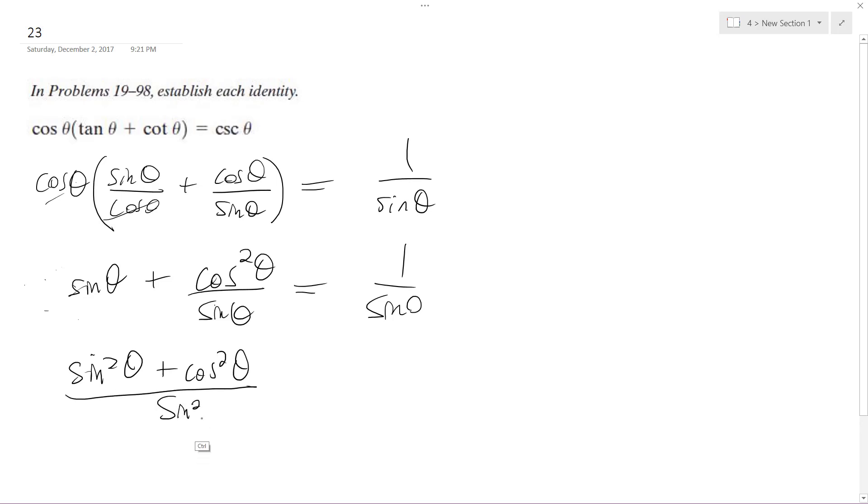This becomes simply one, which is a trig identity. So we're left with one over sine theta equals one over sine theta. And that's it. Hope that helps you out, thanks for watching.